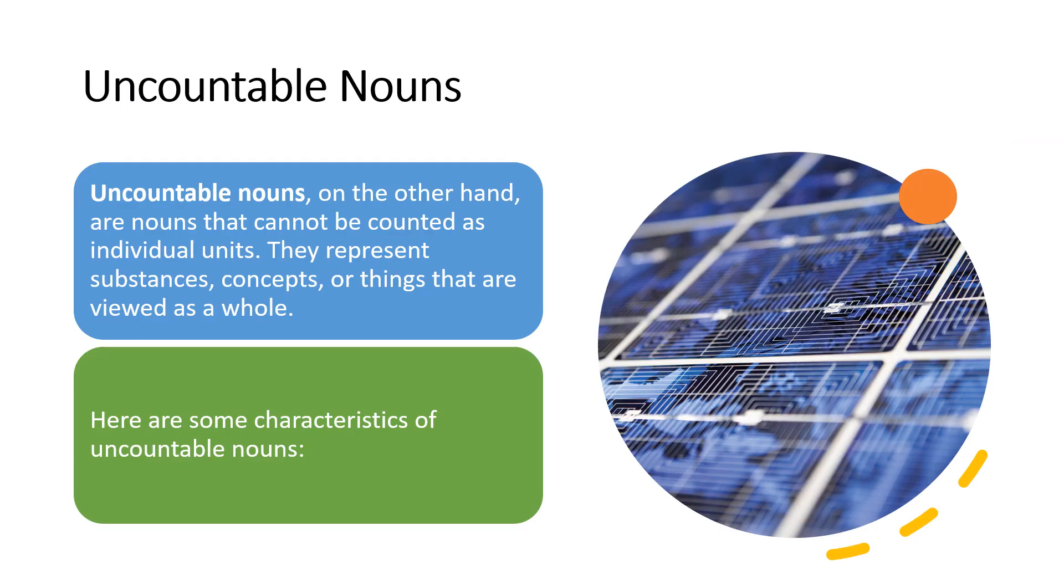Uncountable nouns, on the other hand, are nouns that cannot be counted as individual units. They represent substances, concepts, or things that are viewed as a whole. The characteristics of uncountable nouns are as follows: